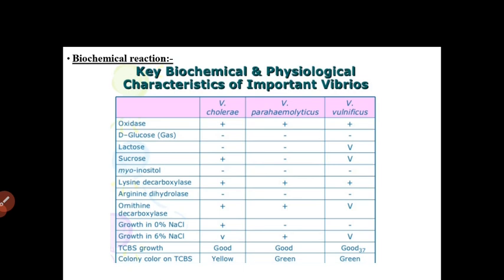One thing to note: when you see 'V' written — for example, under Vibrio vulnificus in the lactose line — it means variable. Variable means it can be either positive or negative; it can be lactose positive or lactose negative. Please go through this biochemical chart carefully.